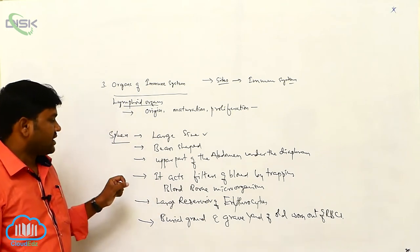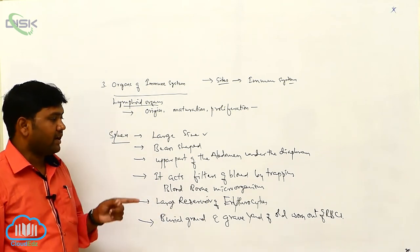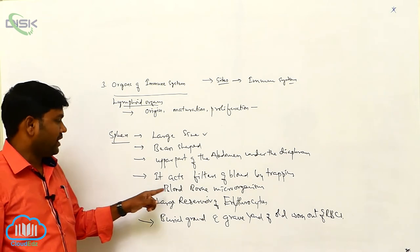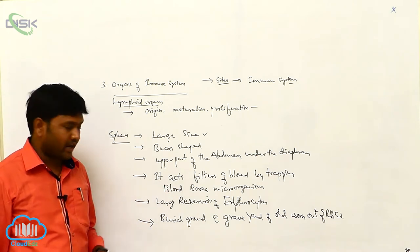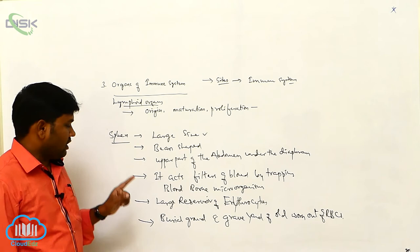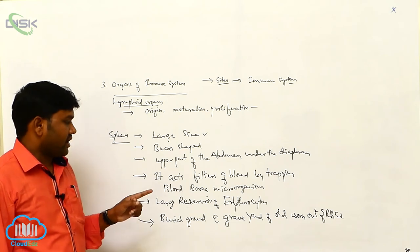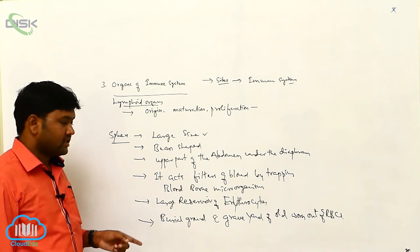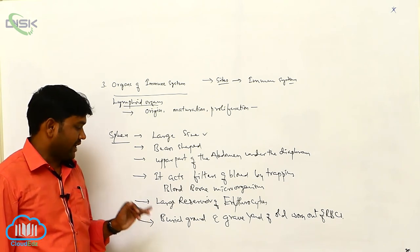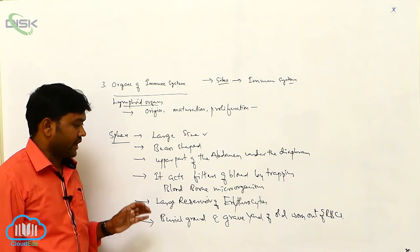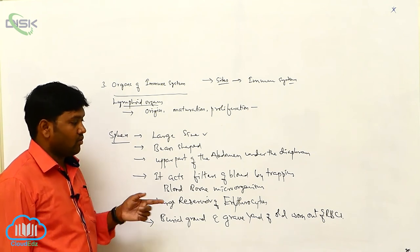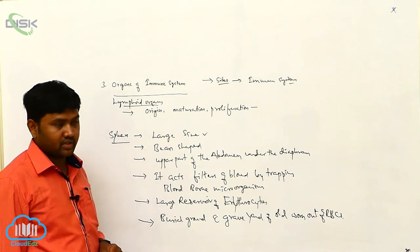It acts as the filter of blood by trapping the blood-borne microorganisms. It acts as a large reservoir of erythrocytes, and it is also called the burial ground or graveyard of the old worn-out erythrocytes.